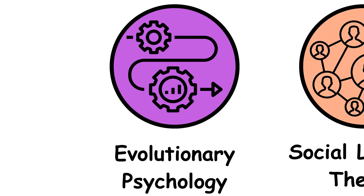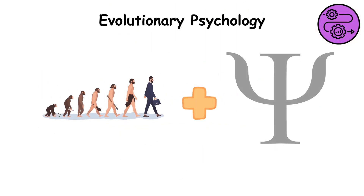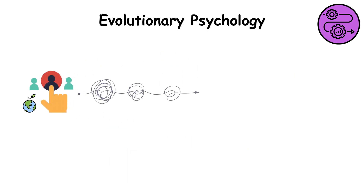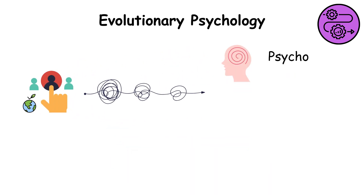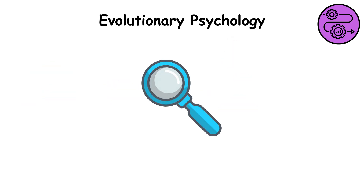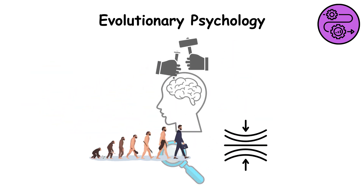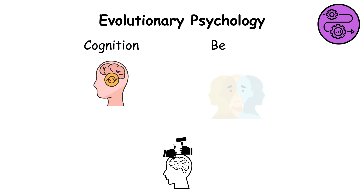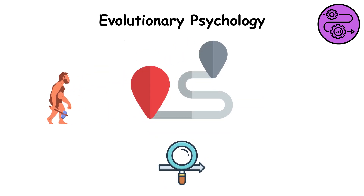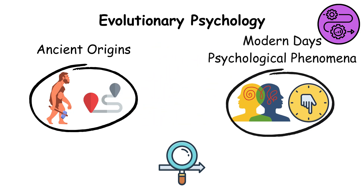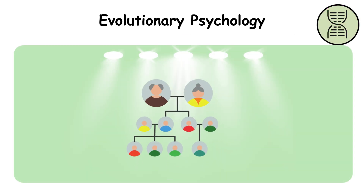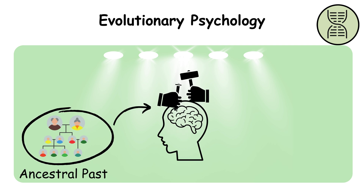The evolutionary psychology. Evolutionary psychology applies the principles of natural selection to unravel the adaptive significance of psychological processes and behaviors. By examining how evolutionary pressures shape human cognition and behavior, this framework unveils the ancient origins of modern-day psychological phenomena, shedding light on the enduring legacy of our ancestral past in shaping the contours of the human mind.